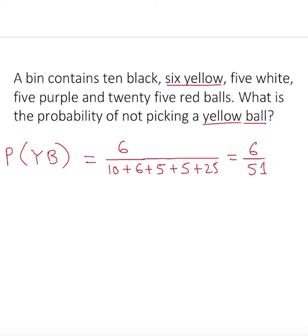Remember, we are not looking for picking a yellow ball. They said not picking. So the remaining, we can subtract fifty-one take away six. But we have to reduce it. Six out of fifty-one, we can clearly see, is going to be two out of seventeen.